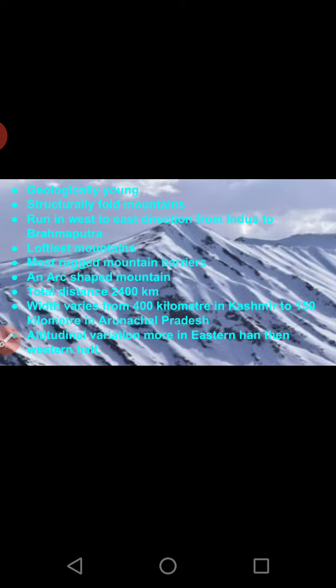From the Indus river in the northwest, the Himalayas cover maximum northern India and continue till the river Brahmaputra in the east. So from the Indus river fault — that means a gap — till the Brahmaputra river fault, the Himalayas are spread.